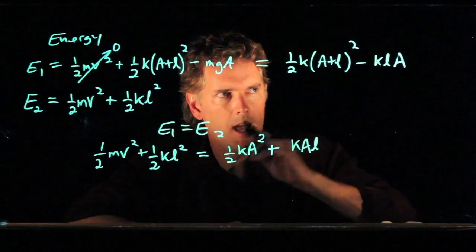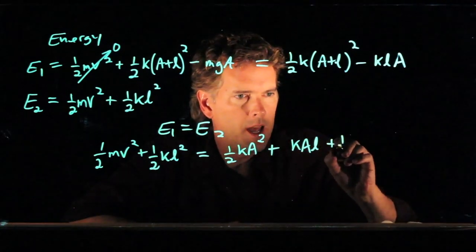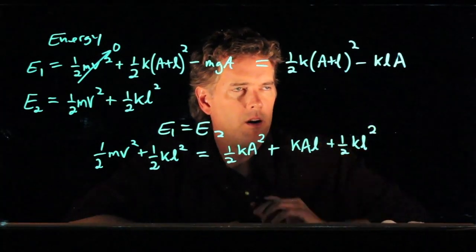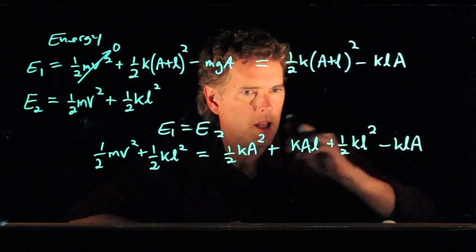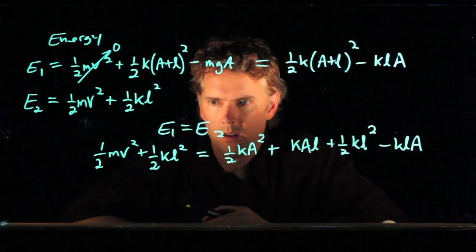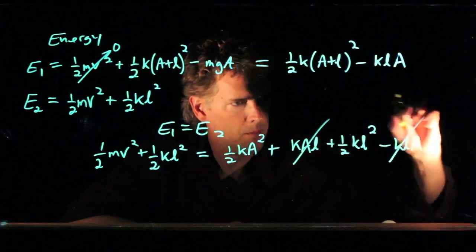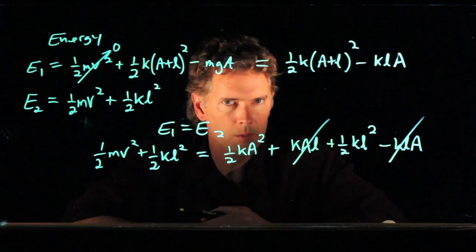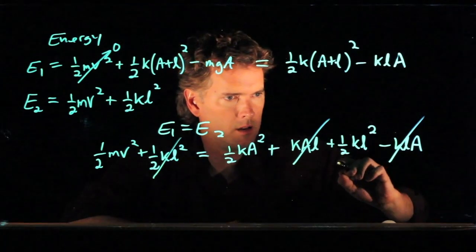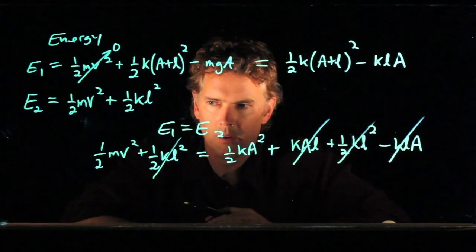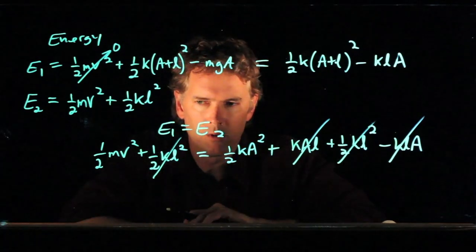So we have KAL. And then we have one-half KL squared. And then we're still subtracting this last term, KLA. And now look what happens. KAL and minus KLA, we can get rid of those. And one-half KL squared is over there as well, so we can get rid of those. And that looks very familiar. That looks like our old equation.